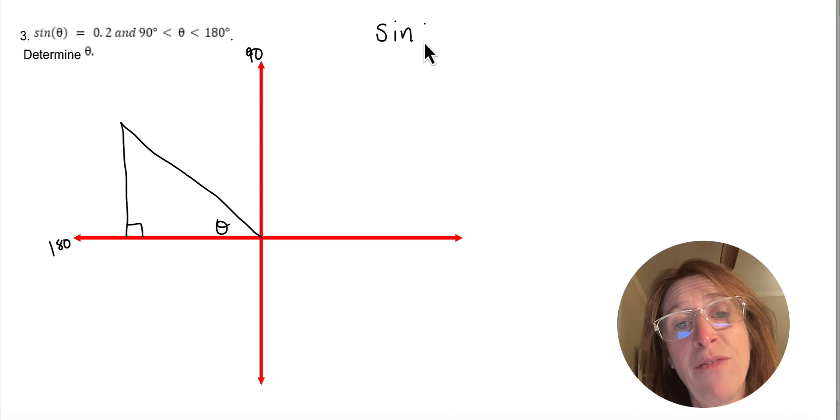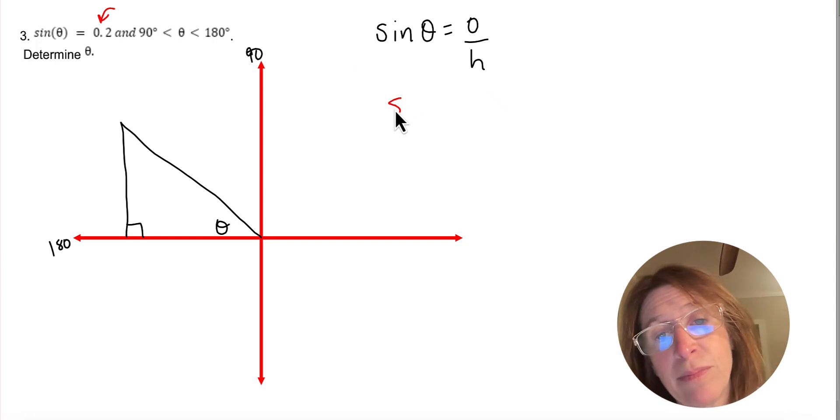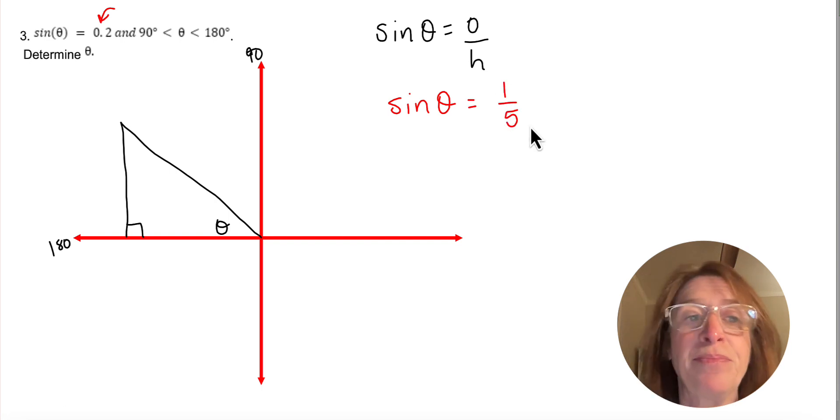Sine we know of theta is always the opposite over the hypotenuse, but it might be tricky for you because this says 0.2. It can be a decimal, a ratio is a decimal, but I would probably write that as a fraction. So 0.2 is one-fifth, right?